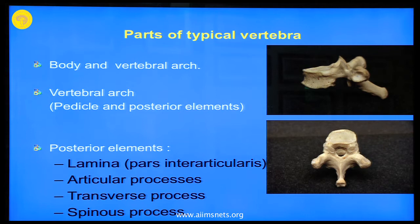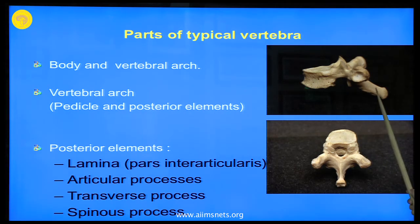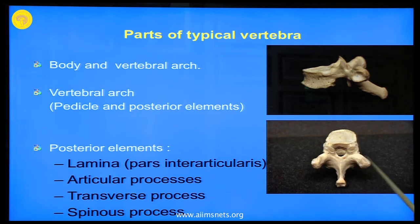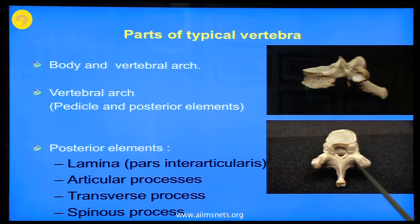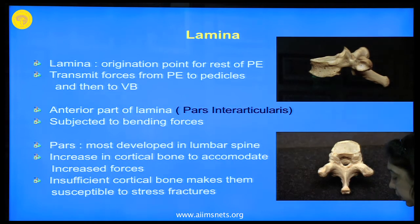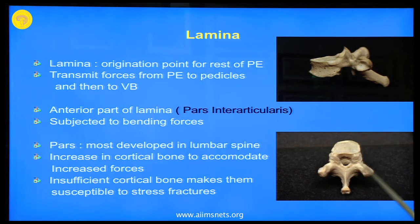The vertebra is composed of the body and the vertebral arch. The vertebral arch has a pedicle and the posterior elements — the lamina, the articulating facets, the transverse processes, and the spinous process. The anterior part of the lamina, between the two facets, is known as the pars interarticularis. This transmits bending forces from the posterior elements to the pedicles, which are the short stout pillars transmitting the force of all the posterior elements to the vertebral bodies.